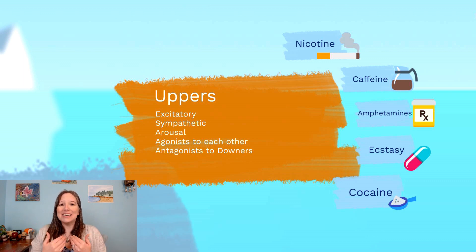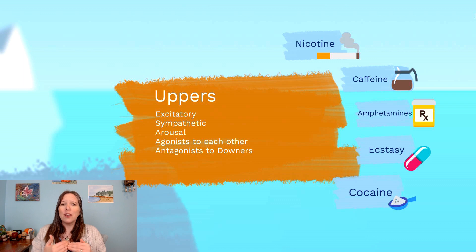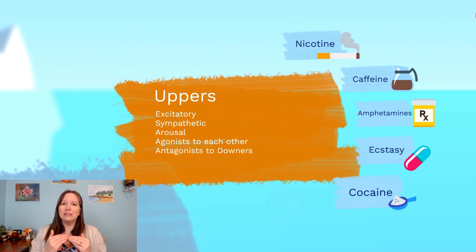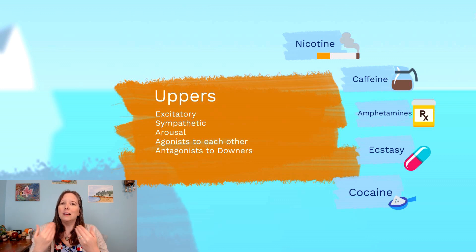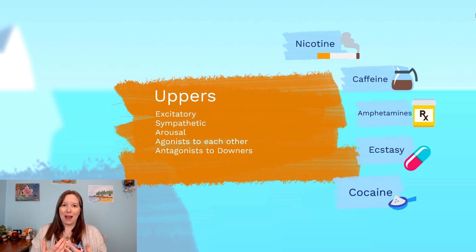Uppers and downers are antagonists of each other, meaning if you combine them, you can cause really severe health outcomes. For instance, if you're taking a really potent upper like cocaine with a really potent downer like heroin — also known as a speedball — that can be life-threatening. So don't do that.